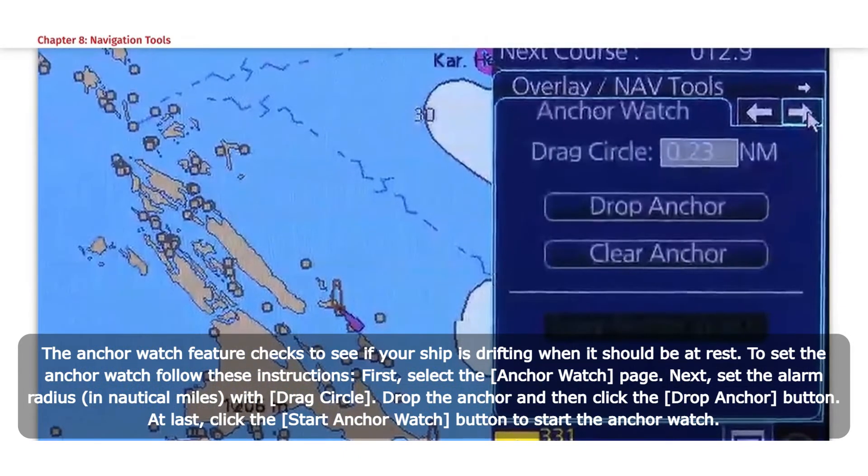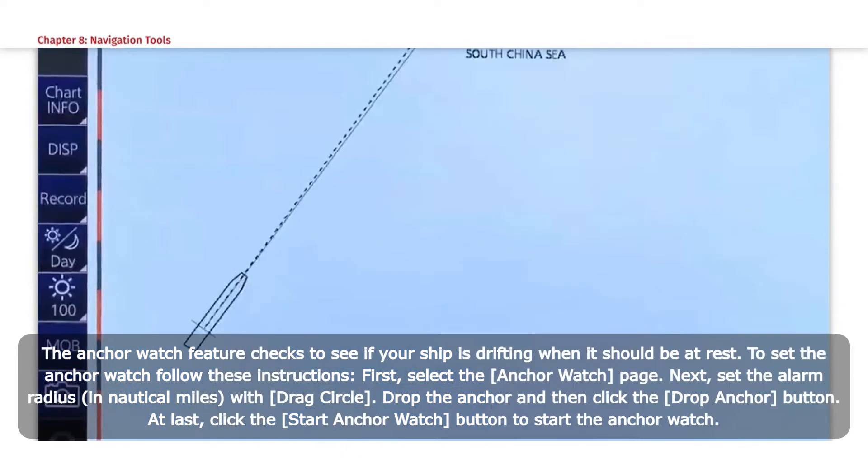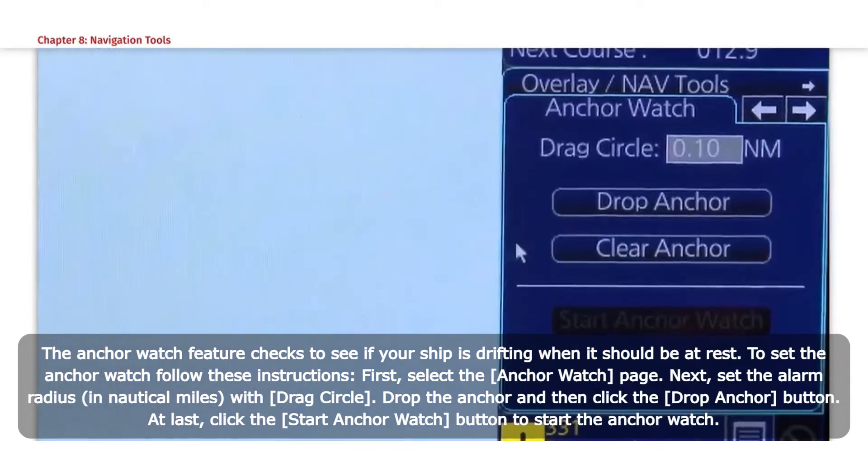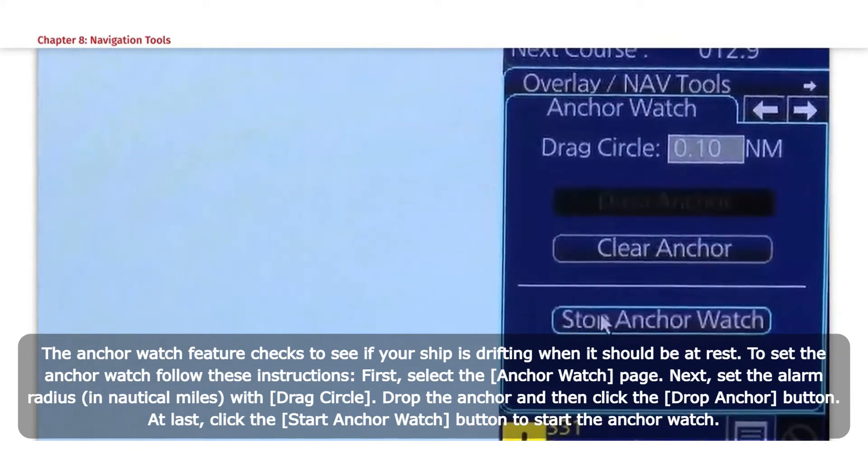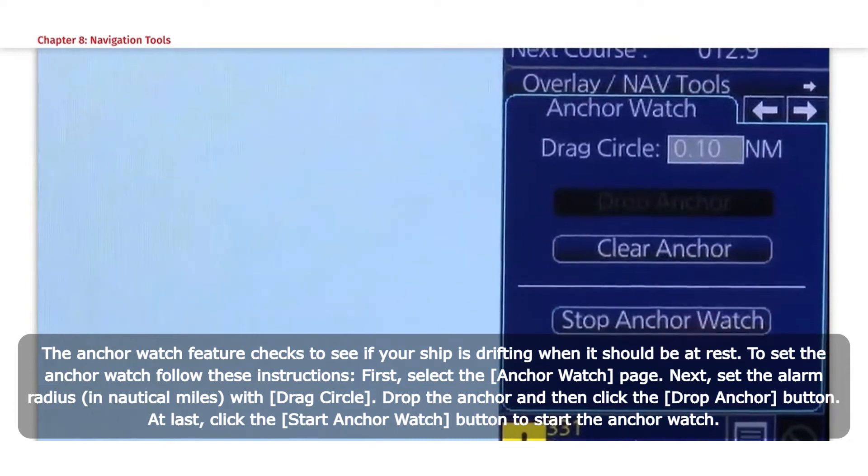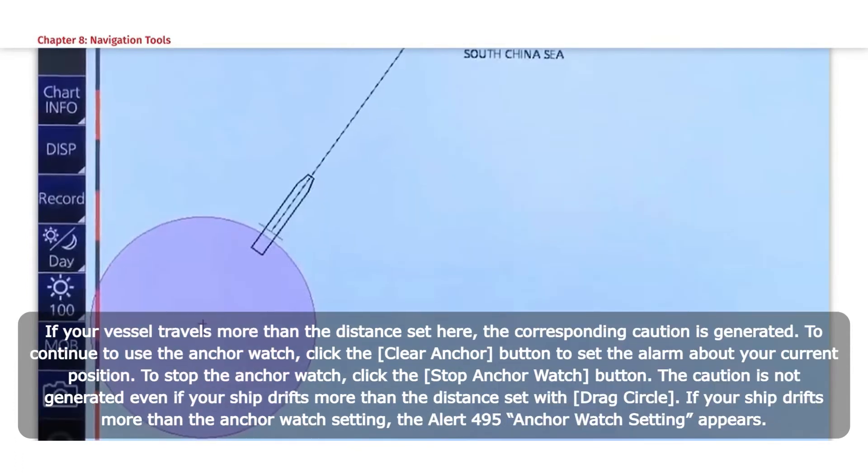First, select the Anchor Watch page. Next, set the alarm radius in nautical miles with Drag Circle. Drop the anchor and then click the Drop Anchor button. At last, click the Start Anchor Watch button to start the anchor watch.